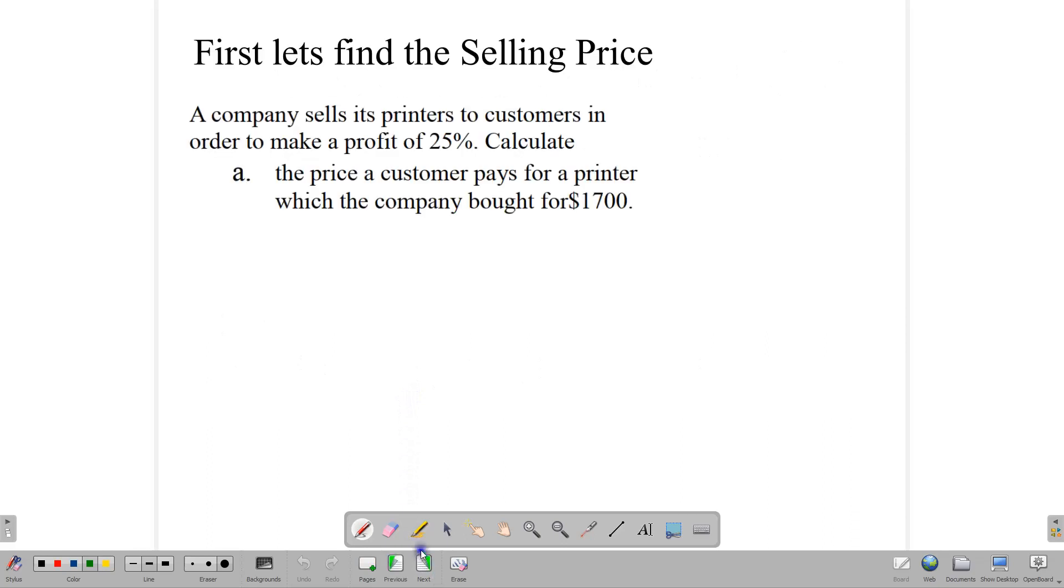So here we have our first question, and this is a typical question where we are going to find our selling price. A company sells its printers to customers in order to make a 25% profit, and we are supposed to calculate the price the customer would pay for a printer which the company bought for $1,700. So the customer is going to pay the selling price, which is $1,700 plus the 25% profit.